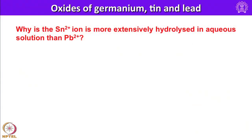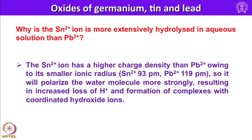These oxides are essentially amphoteric and dissolve in both acids and bases. Hydrated tin and lead 2+ ions undergo successive shell hydrolysis. A key question: why is the Sn2+ ion more extensively hydrolyzed in aqueous solution than Pb2+? The answer is that Sn2+ has a relatively larger charge density compared to Pb2+ owing to its smaller ionic radius — 93 pm for Sn2+ versus 119 pm for Pb2+.